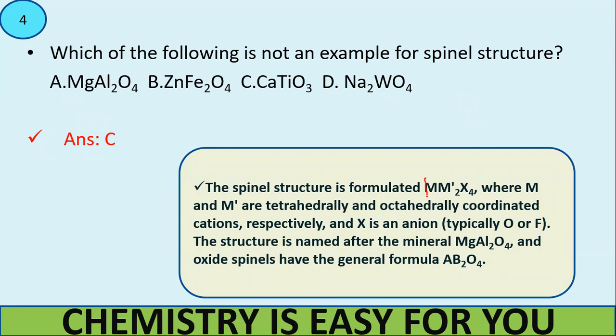Now let me give some more example of what a spinel structure is. So a spinel structure has a formula of M M' 2 X4. So there are M and M' elements with 2 M' present and X4. This X is usually an anion. Typically it can be either oxygen, fluorine or it can be a combination of both at times. The structure is first named after the mineral of MgAl2O4 and the general formula is AB2O4. M and M' are tetrahedrally and octahedrally coordinated cations and their oxidation states are also to be considered. So this is the information about spinel structure.